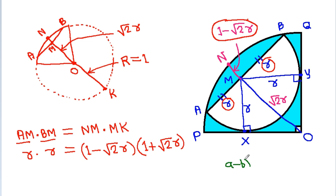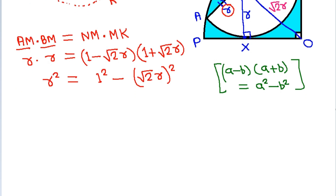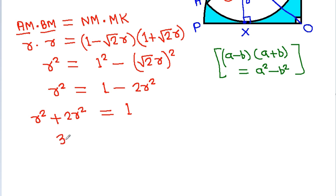Using (A − B)(A + B) = A² − B², we get R² = (1 − √2·R)(1 + √2·R) = 1 − 2R². So R² + 2R² = 1, giving 3R² = 1, therefore R² = 1/3.